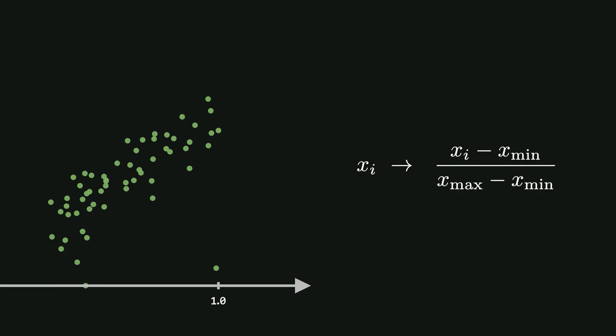Remember, each feature has its own minimum and maximum. So, this scaling is done separately for every feature. This ensures that all features are transformed to the same range without mixing their scales.